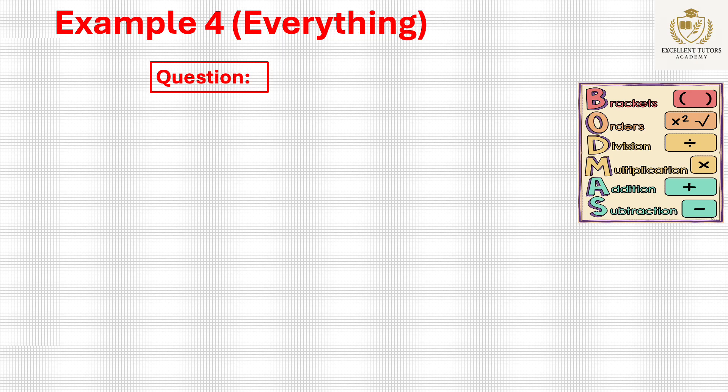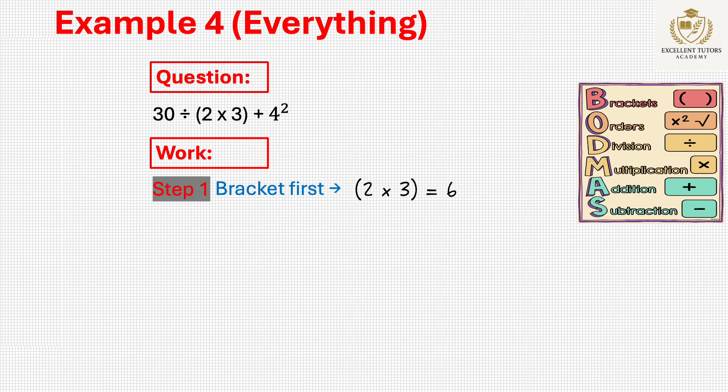Example 4: Let's look at a full BODMAS challenge. 30 ÷ (2 × 3) + 4². Step 1: Brackets—2 × 3 = 6. Step 2: Orders—4² = 4 × 4 = 16.